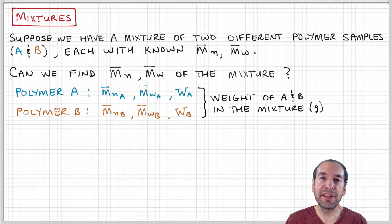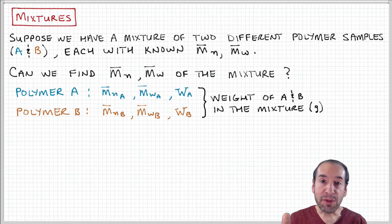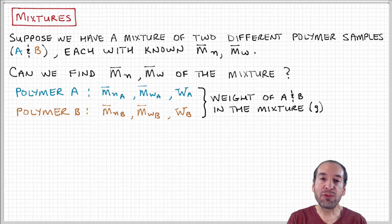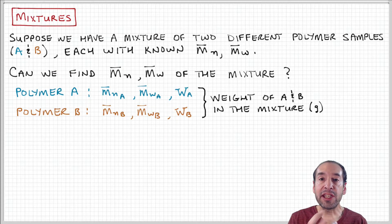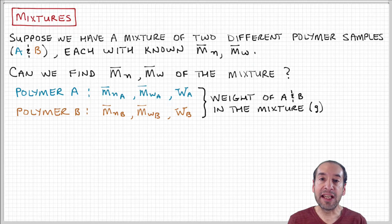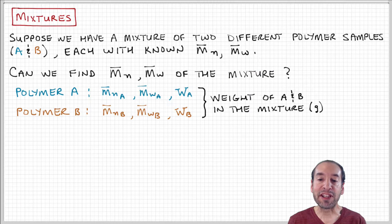We talked about calculating molecular weight averages for samples that have a distribution of chain lengths. Here we're going to look at a different case where we have mixtures of different polymer samples. Suppose we have a mixture of two different polymer samples, A and B. Each of these polymer samples has its own distribution of chain lengths, and imagine that those are characterized in terms of molecular weight averages — number average and weight average molecular weight, for example.